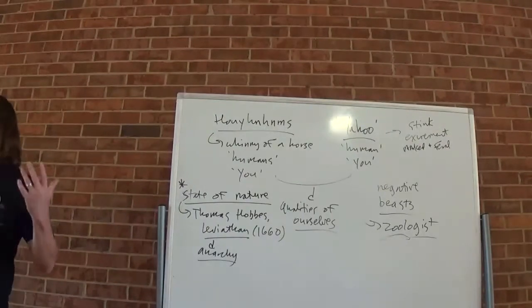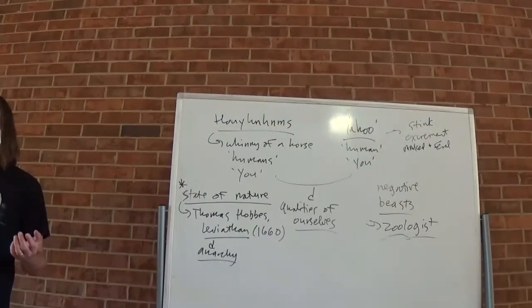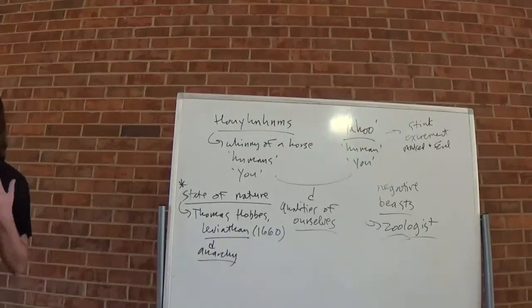Hobbes was alarmed by the breakdown in civil institutions and authority occasioned by the Civil War, and argued that human beings without civilization lived in what he called a state of nature. The state of nature for Hobbes is a state essentially of anarchy, where the strongest can impose their will on others through brute force, or through cleverness and trickery, or through duplicitous behavior.